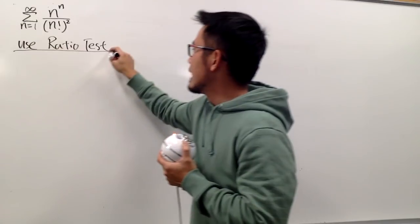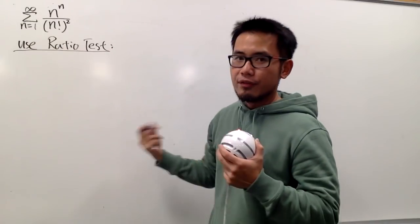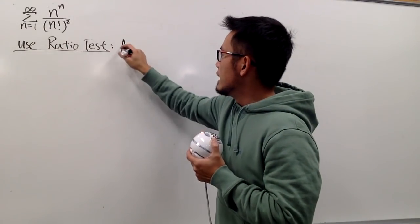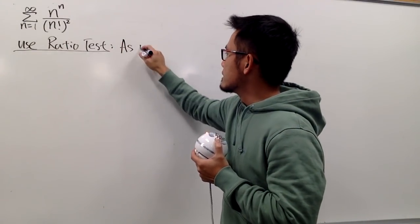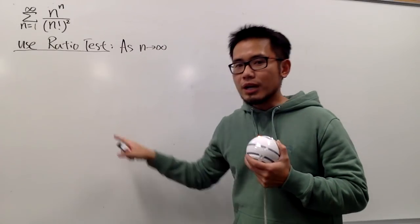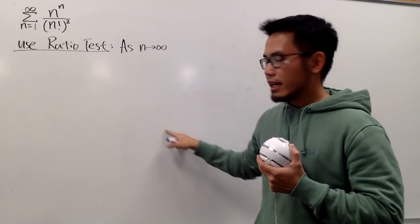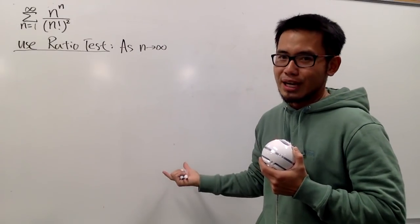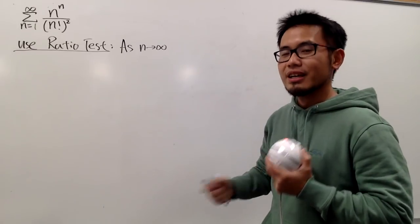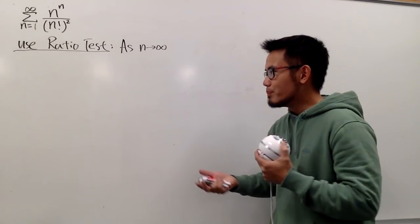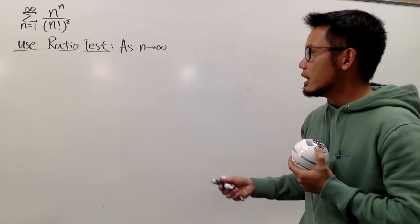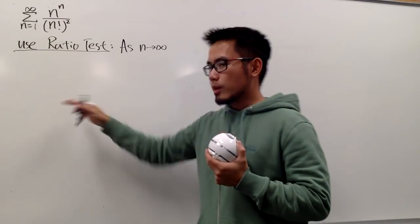The ratio test says we will have to first take the limit as n goes to infinity. You don't have to write down the LIM every single time — this is just as legitimate as long as you show your work neatly and properly. And then we'll do all the algebra work right here.